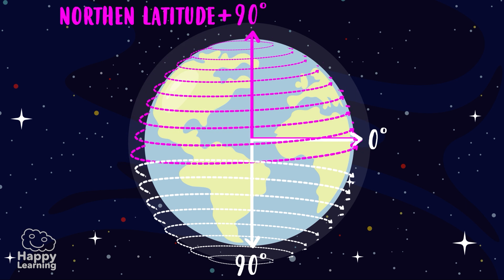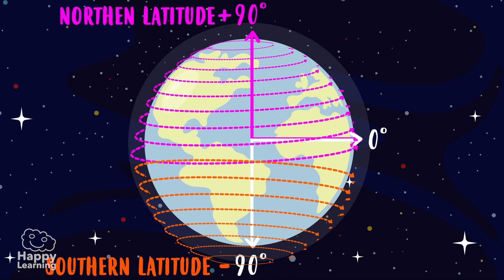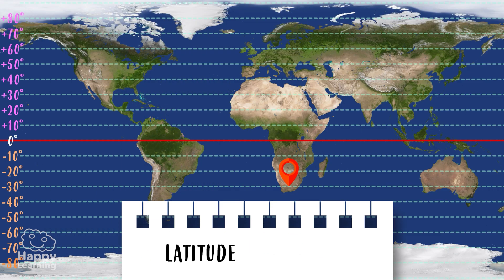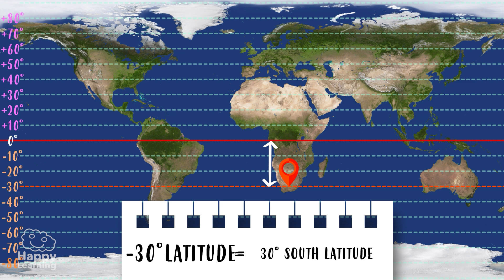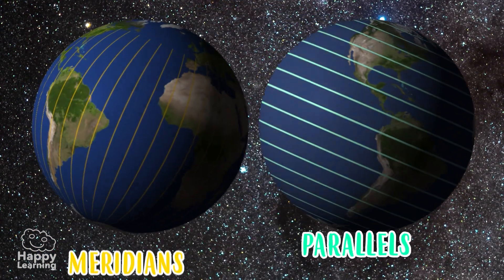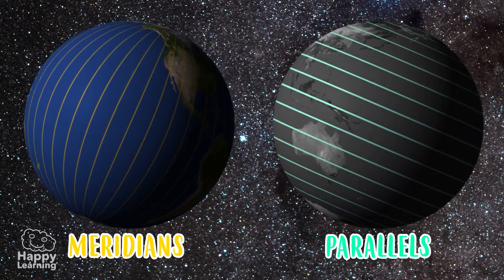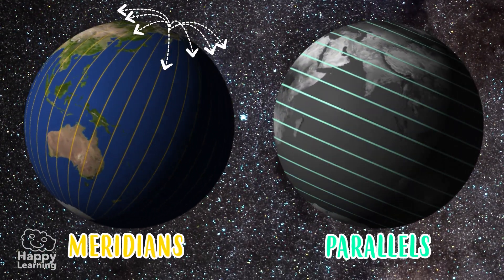It works like this: upwards is northern latitude, or positive latitude, and downwards is southern latitude, or negative latitude. For example, if we are at this point, we are at latitude 0 to the equator, then minus 10, minus 20, minus 30 — negative latitude. That means we're at a latitude of 30 degrees south. Now we know the parallels!